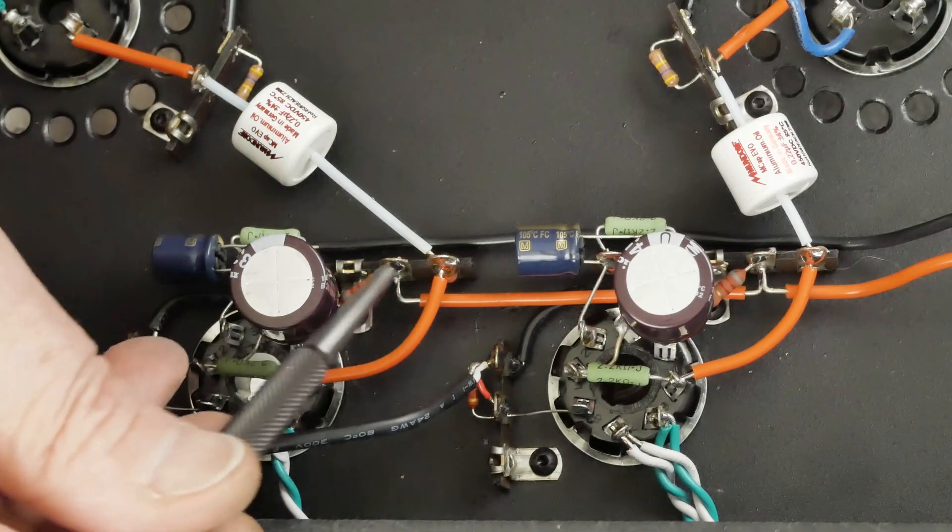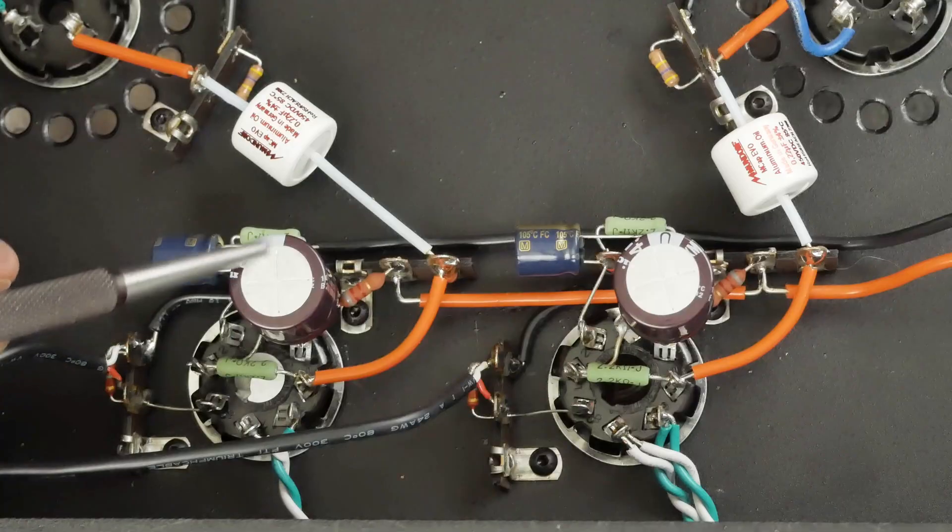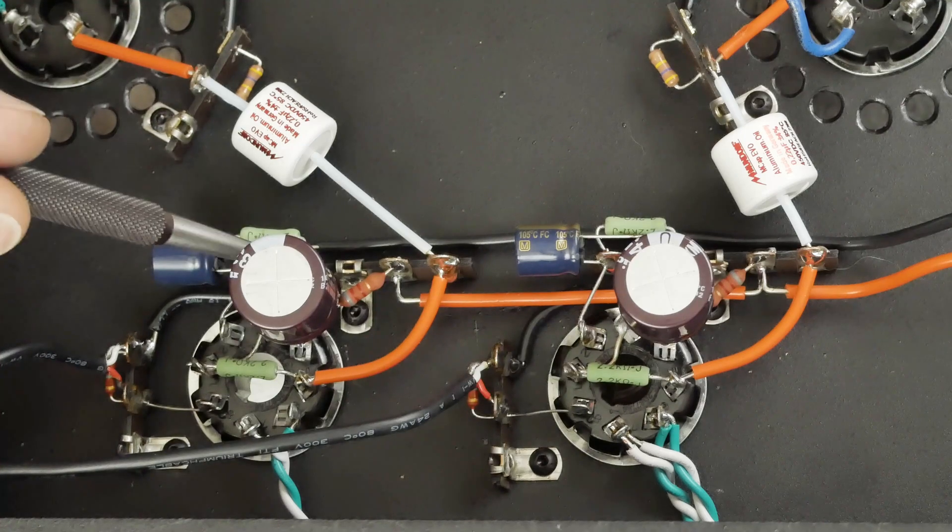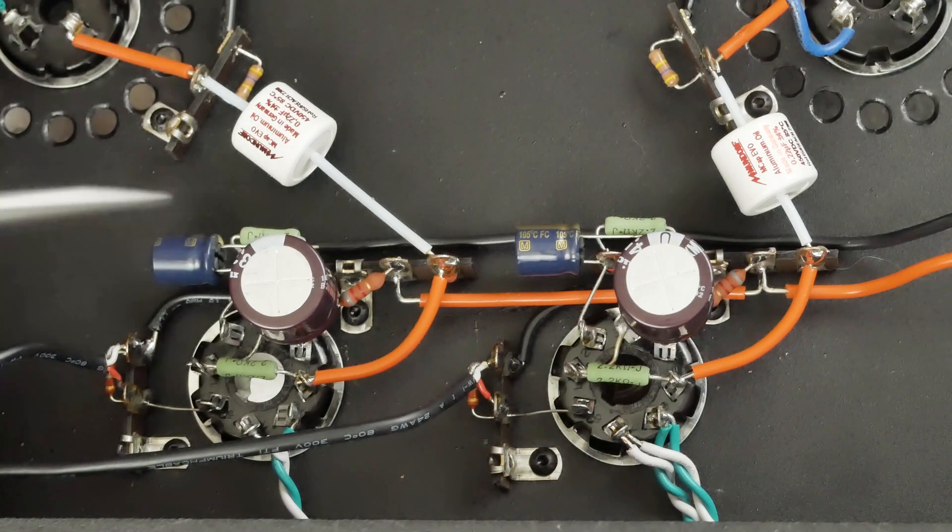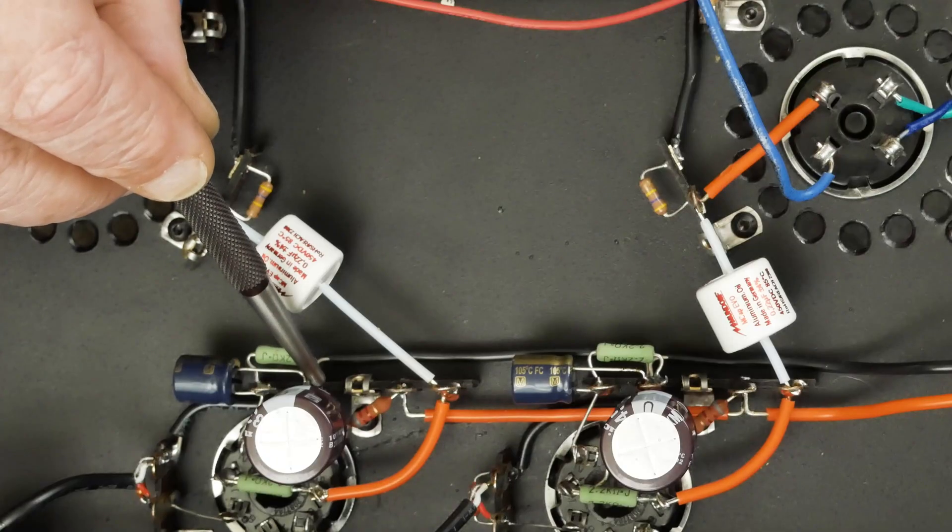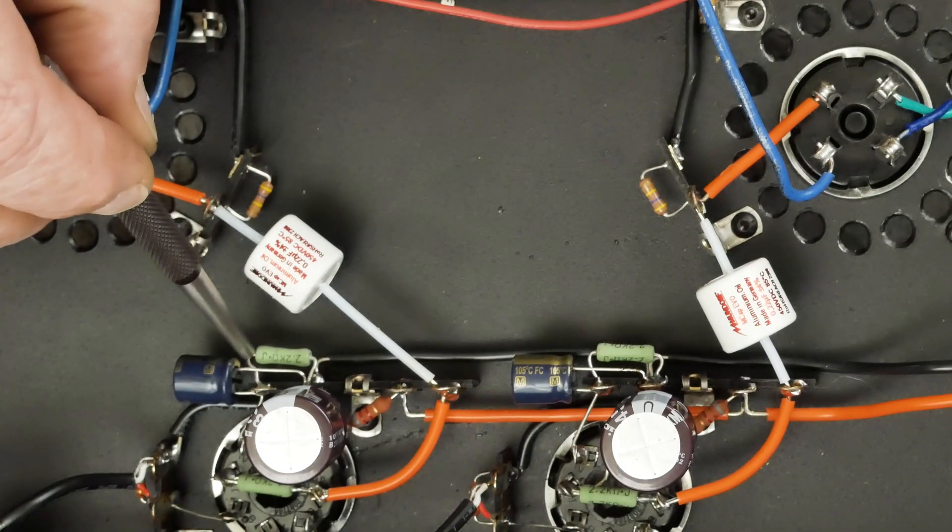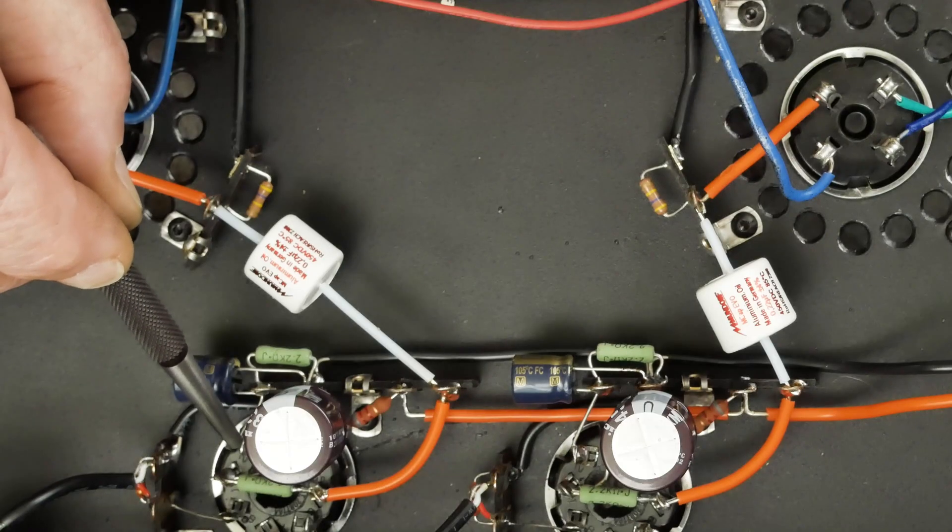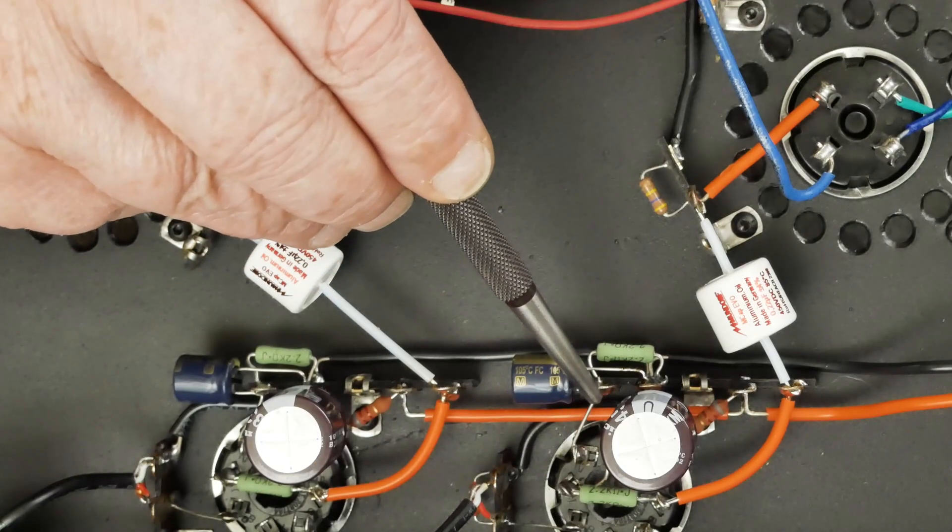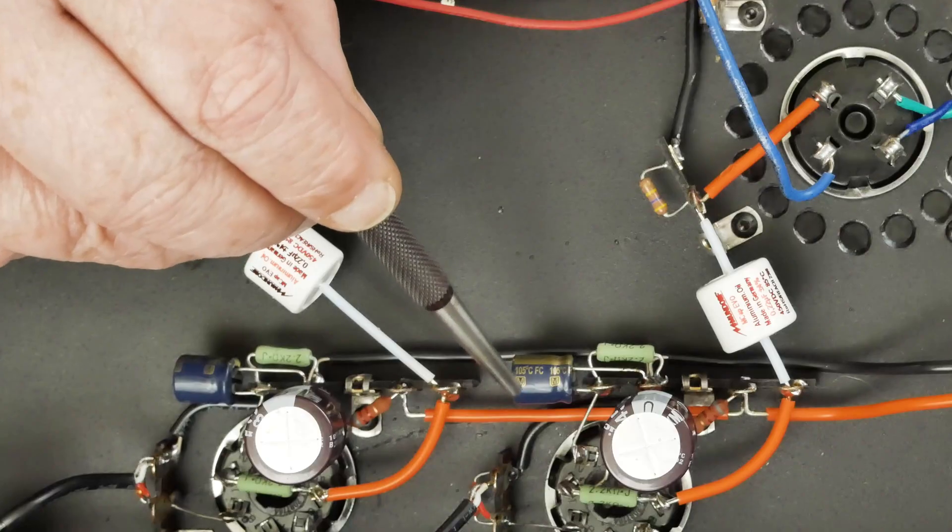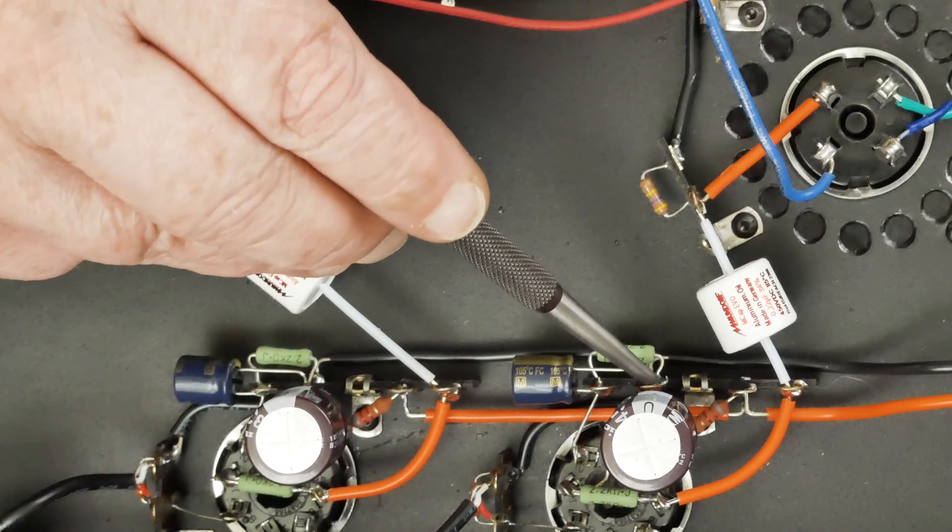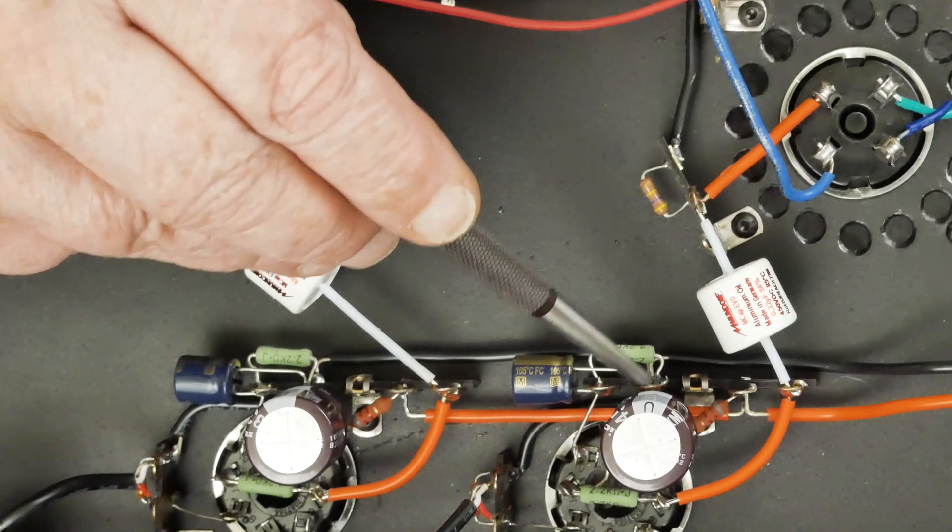This is the dropping resistor, and then this is the decoupling capacitor that goes between the plate and the ground, which is this terminal back here. We have this 2.2K which goes from the cathode - this terminal right here, you can see it better on this tube - up here to this terminal. Then we have our 100µF bypass cap going from this terminal to that terminal, and the ground hooked up there too.